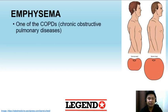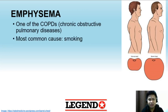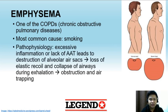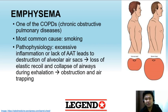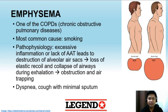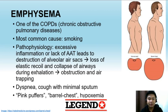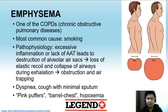Emphysema is one of the COPDs or chronic obstructive pulmonary diseases. The most common cause is smoking, although there are congenital forms like AAT deficiency. Pathophysiology involves excessive inflammation or lack of AAT leading to destruction of alveolar air sacs, loss of elastic recoil, and collapse of airways during exhalation, causing obstruction and air trapping. Emphysema manifests with dyspnea, cough with minimal sputum, barrel chest, and hypoxemia. Patients are described as pink puffers because they exhale slowly through their mouth.